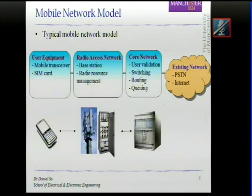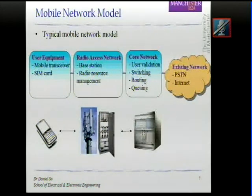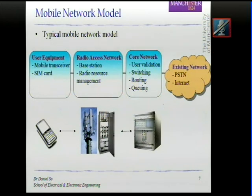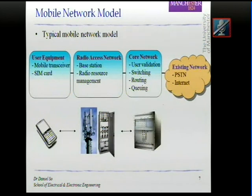The radio access network then connects to the core network, where the core network performs user validation, switching, routing, queuing, and so on. This connects to the existing network such as the PSTN, the internet, or perhaps another service provider.